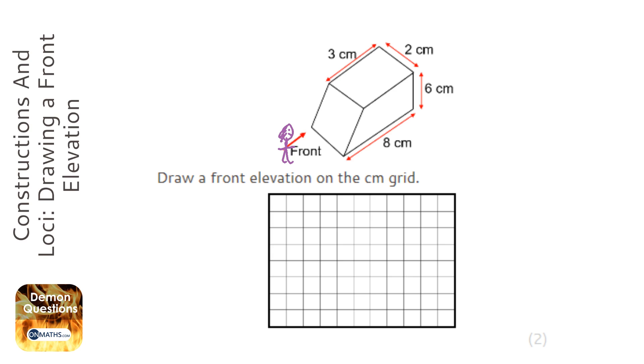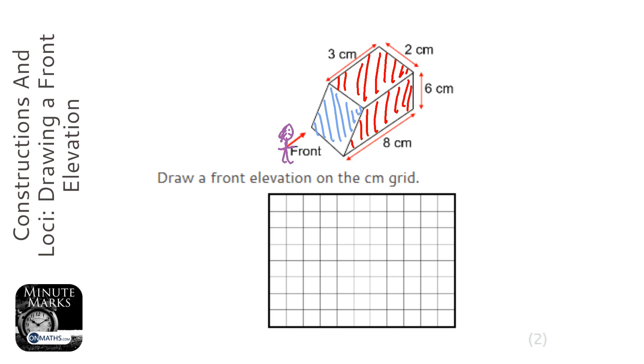We're not going to see any of this, not going to see any of that, we're not going to see any of that either. So the only thing we're going to see is this bit here. It's really important for front, side elevations and plans that we don't have any 3D in the shape at all.